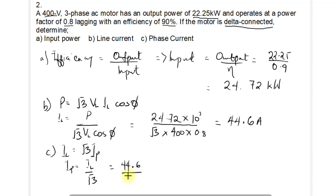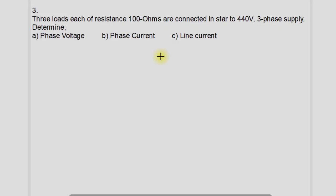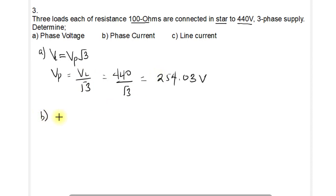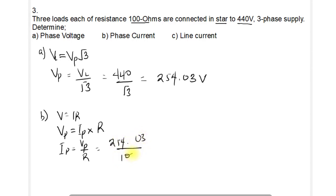Question 3: three loads each of resistance 100 ohms are connected in star to a 440 volt three-phase supply. For the phase voltage in a star connection, VP = VL / √3 = 440 / √3 = 254.03 volts. Using Ohm's law, the phase current IP = VP / R = 254.03 / 100 = 2.54 amperes.